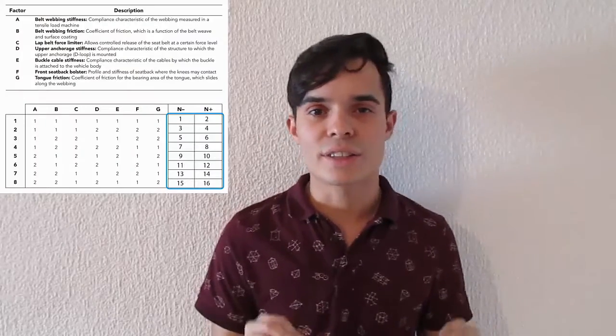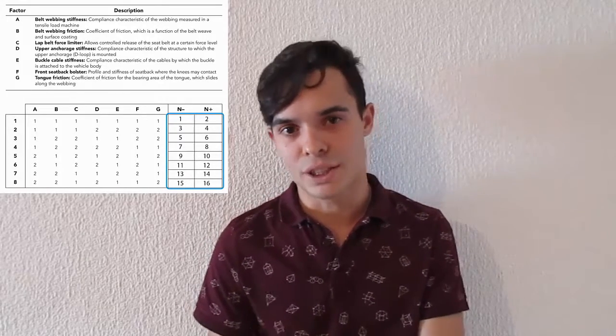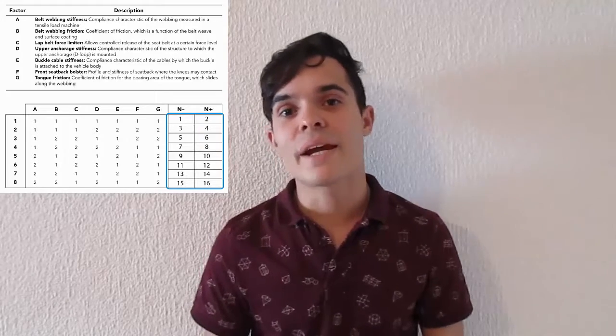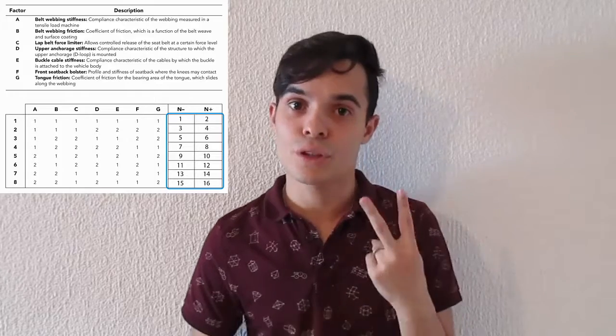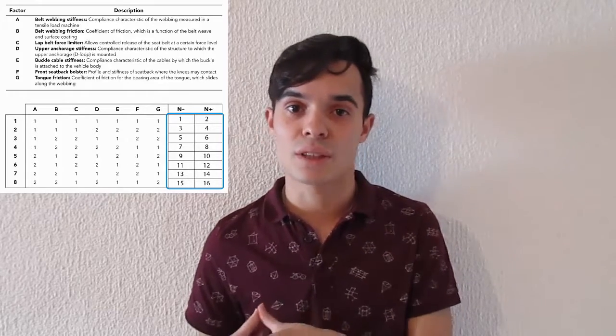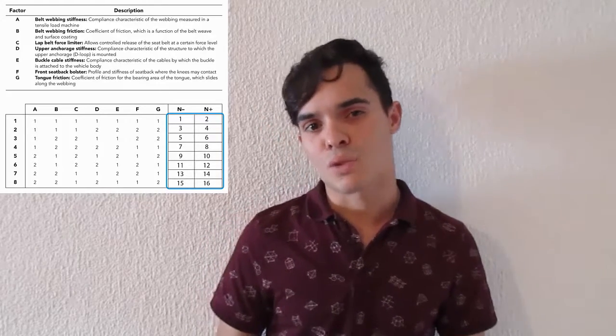Step 3: Develop the experimental plan. Here, you have to organize and find a proper combination of trials to investigate all the noise factors and control factors you have chosen, so that the experiment fits your budget. In this example, the Ford team made two combinations of the three noise factors they had chosen, and this resulted in 16 experimental runs.